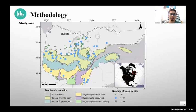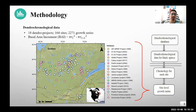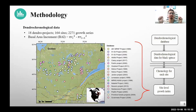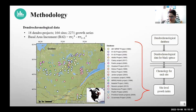This is the study area where we can see the distribution of our sites in Quebec across different bioclimatic zones. At each site, we acquired dendrochronological data. For this, we compiled 18 different dendrochronological projects that were conducted in Quebec over the last three decades. From these, we have around 2,300 black spruce trees distributed across 164 sites. We summarized the growth rate into basal area increment to find the site-level growth index.